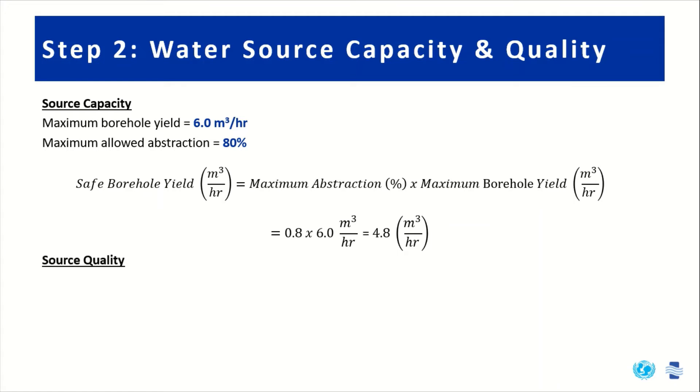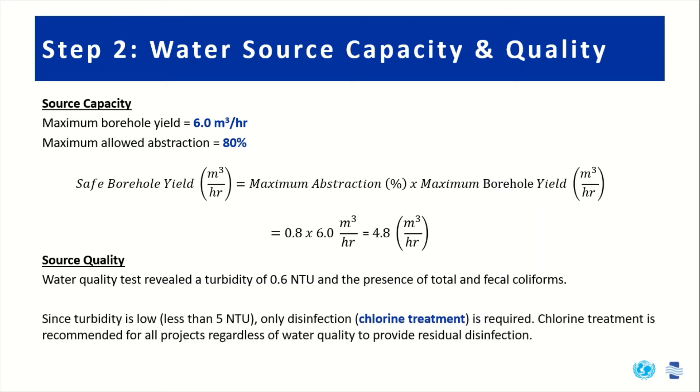We also conducted water quality tests, which revealed a turbidity of 0.6 NTU and the presence of total and fecal coliforms. Since the turbidity is low, less than 5 NTU, only disinfection, in this case chlorine treatment, is required.